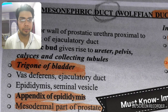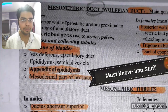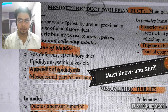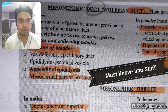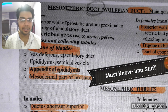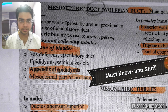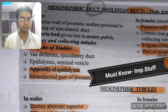In case of males, there are two separate entities: the mesonephric duct and the mesonephric tubules. You must pay attention to whether the examiner asks about the duct or the tubules. The derivative of the mesonephric duct includes the posterior wall of the prostatic urethra, proximal to the opening of the ejaculatory duct.